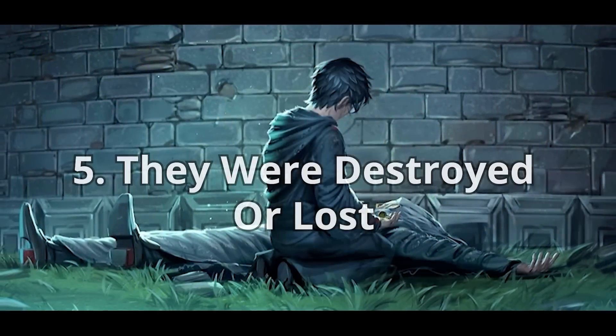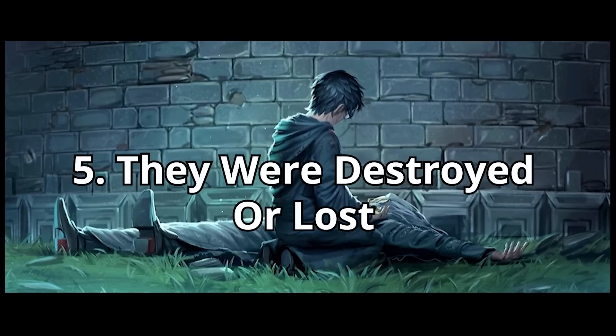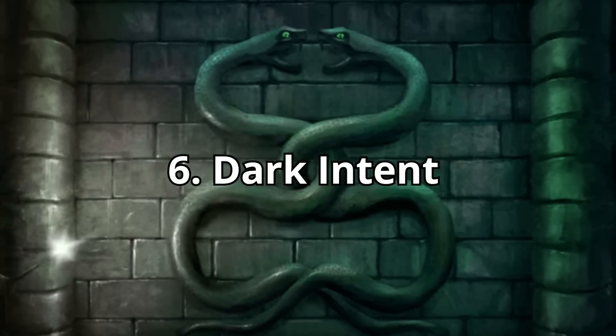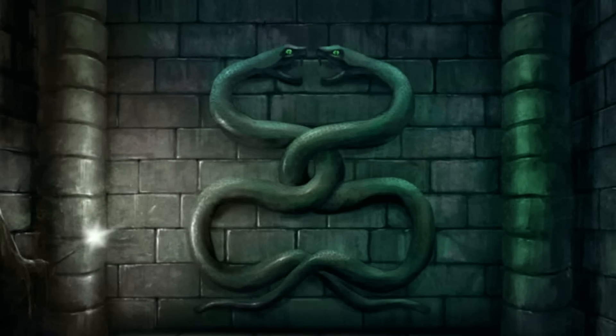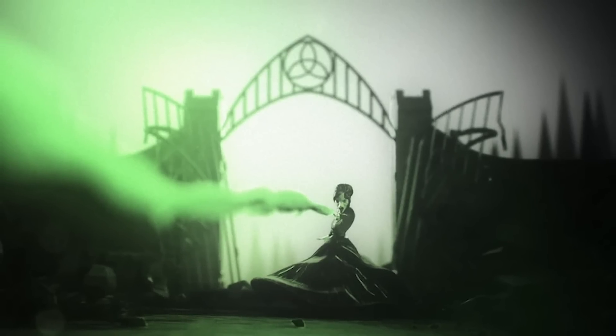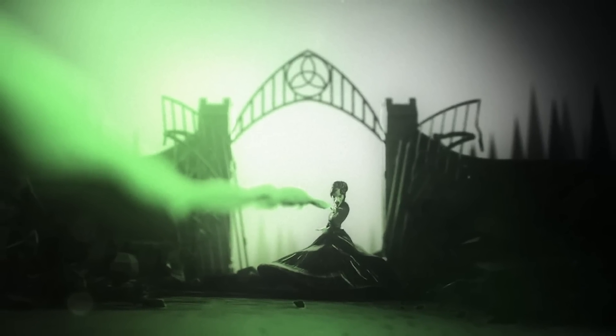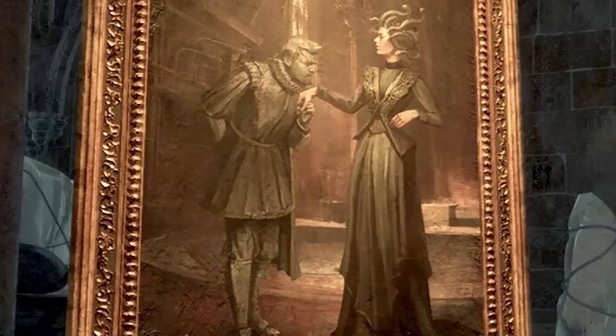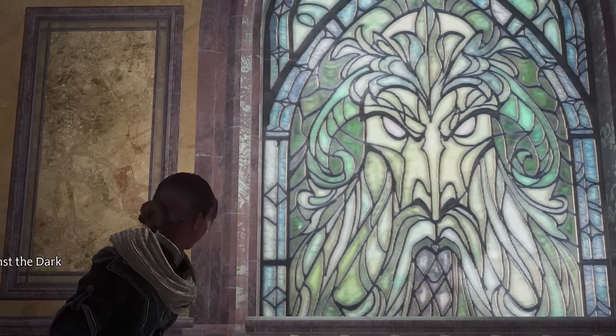Theory five: They were destroyed or lost. It's entirely possible that at one time the founders did in fact have their own portraits, but that over the course of time these portraits became damaged or lost. Hogwarts has been around for over a thousand years, which presents an awful lot of opportunities for things to go missing and get damaged. Theory six: Dark Intent. Another reason the founders may have opted not to have portraits is concern about their potential use for dark magic. In the wizarding world, portraits can sometimes be manipulated by others, and perhaps the founders did not want to risk their portraits being used for nefarious purposes.